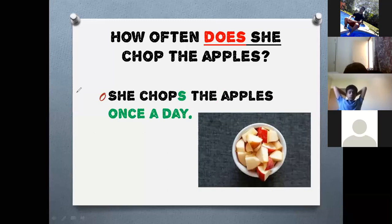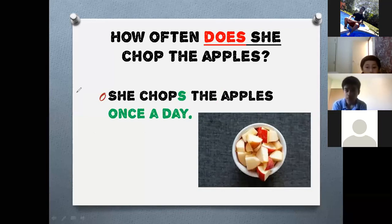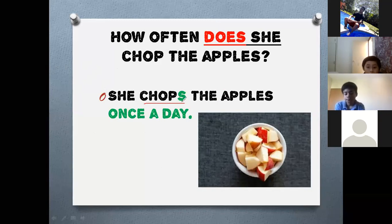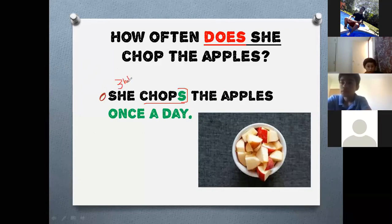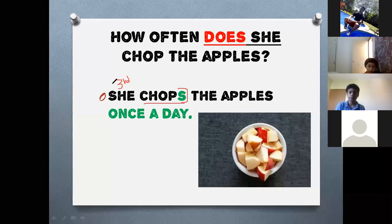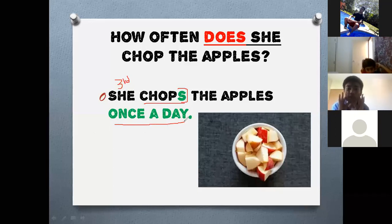Another question: 'How often does she chop the apples?' Remember, 'chop' means to cut into small pieces. The answer: 'She chops the apples once a day.' We add an S to 'chop' — 'chops' — because we are talking about third person. She, he, and it are third person, so the verb takes an S.